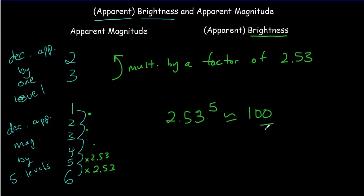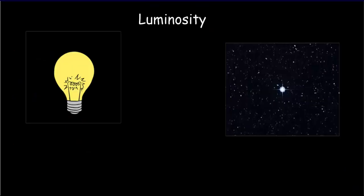In fact, it's officially defined that way. If you decrease your apparent magnitude by 5 levels, then by definition the brightness has to change by 100. That's how we define what's meant by apparent magnitude. Now hopefully you understand brightness. We want to move on and look at luminosity.